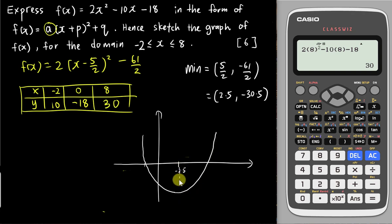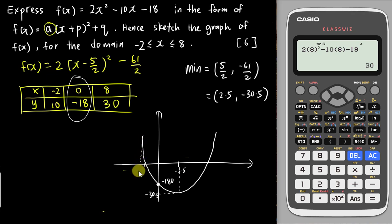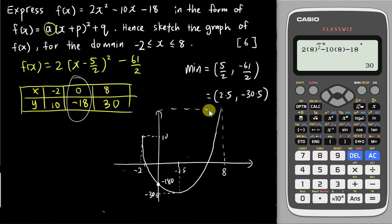The minimum point on the U-shape is at y = -30.5. The y-intercept coordinate is (0, -18). At x = 8, y is about 30, so make the y-axis slightly longer to accommodate 30. This gives you a well-proportioned sketch of the parabola.